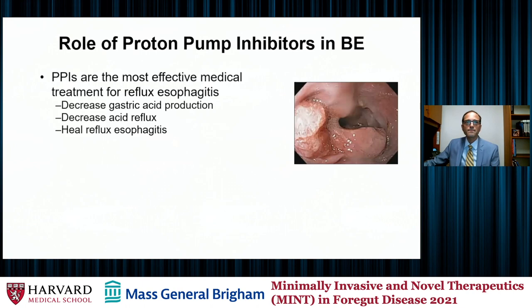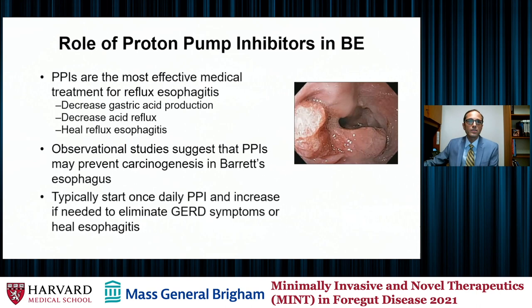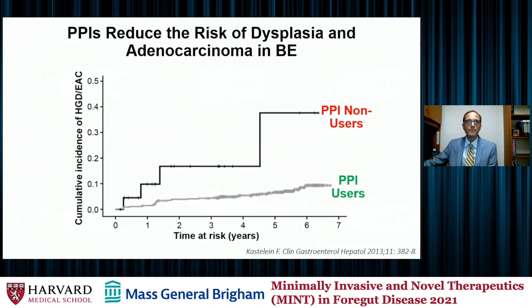The role of proton pump inhibitors in Barrett's esophagus is an important one. PPIs are the most effective medical treatment we have for reflux esophagitis. They decrease gastric acid production, decrease the propensity to have reflux into the esophagus, heal established reflux esophagitis, and observational studies suggest that PPIs can prevent carcinogenesis in Barrett's esophagus. Typically we would start once-daily PPI therapy and increase if needed to eliminate GERD symptoms or to heal esophagitis.